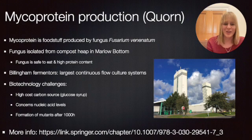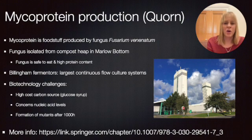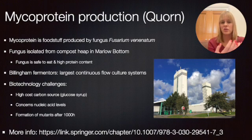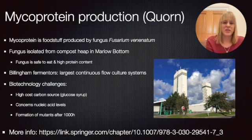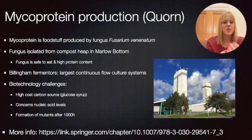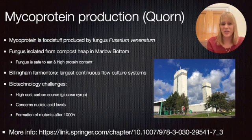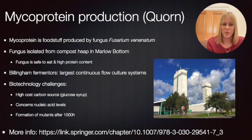Another thing to think about is that because this is a continuous culture, it can go on for quite a while - but unfortunately not beyond six weeks. That's the bottleneck, because after around a thousand hours, whether using an airlift reactor or a stirred tank reactor, mutations start to occur. These mutations are a problem because the cells have a different shape - they no longer resemble the particular structure we want in order to have something that resembles a meat substitute.